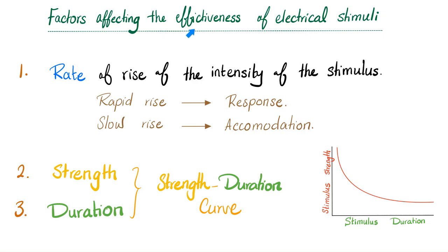Three factors affect the effectiveness of an electrical stimulus: rate of rise of intensity, strength, and duration. A rapid rise produces a great response; a slow rise leads to accommodation — the nerve gets used to it and gives no response. This is like the old adage of boiling a frog slowly. Combining strength and duration gives the strength-duration curve, to be discussed in the next video.